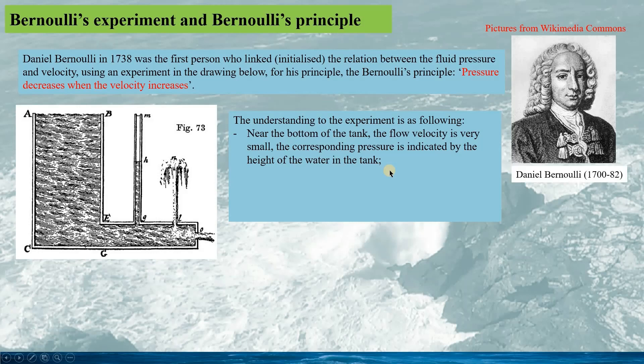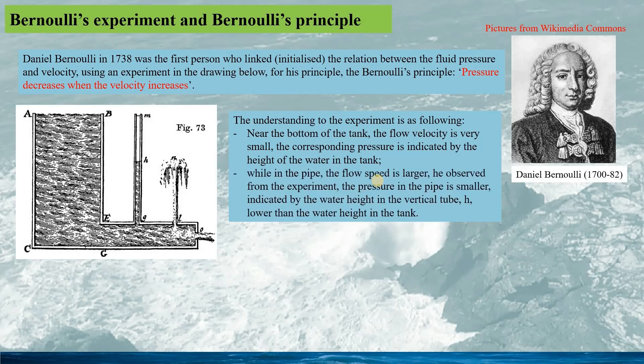In the experiment, it can be explained as this: near the bottom of the tank, the flow velocity is very small, thus the corresponding pressure is high, which is indicated by the height of the water in the tank. While in the pipe, the flow speed is larger. As he observed from the experiment, the pressure in the horizontal pipe is smaller, indicated by the water height h in the vertical tube, which is lower than the water height in the tank.